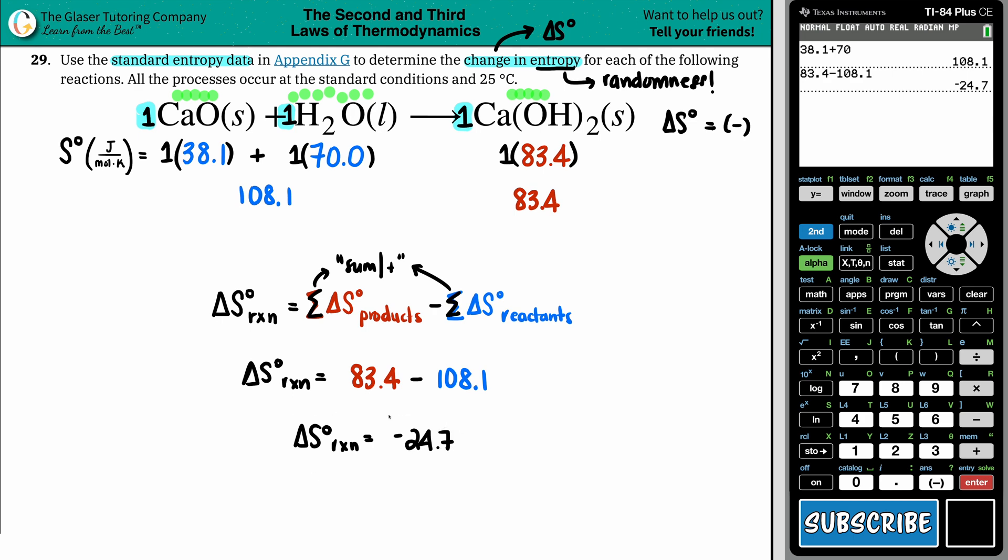And the units for your change in entropy is joules per Kelvin. Keep in mind that you get rid of the moles because that's what you were times in these values. These ones in front were moles. So if you have moles on the top, moles on the bottom, the moles cancel out.